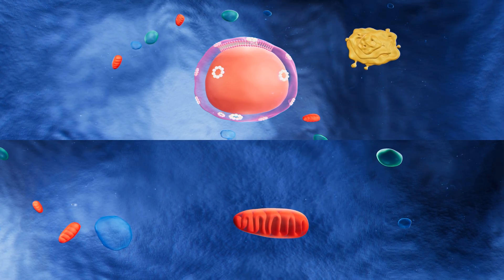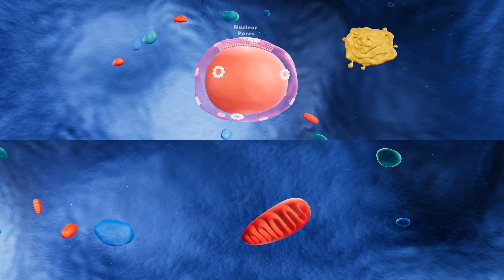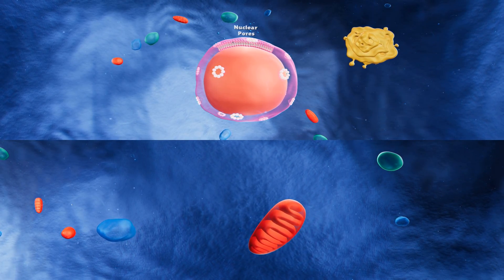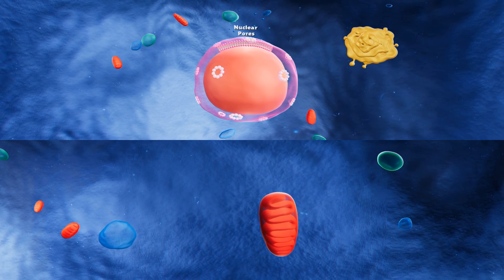The small holes that we can see on the nuclear membrane are nuclear pores. Anything that needs to pass from the cytoplasm into the nucleus moves through these nuclear pores.